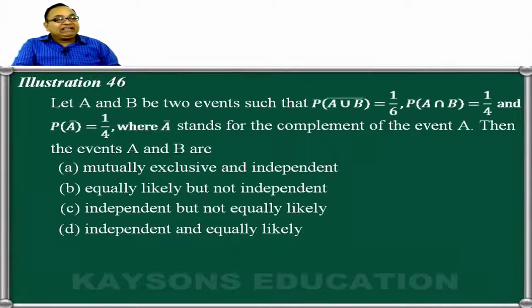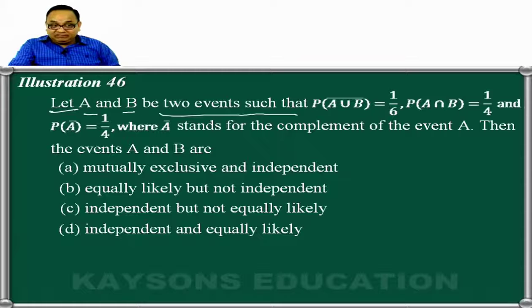The next question is, if it is given, let A and B be the two events such that probability of A union B bar is 1 upon 6, A intersection B probability is 1 by 4, and probability of A bar is 1 upon 4.